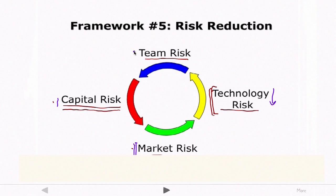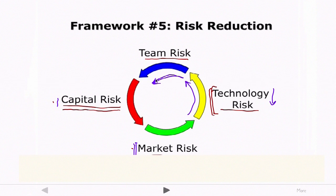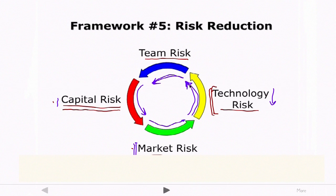You can imagine entrepreneurship as a sequential process of reducing risk, where you start with the riskiest aspect and little by little take risk out of the venture. If you recruit the initial co-founders, you've taken out some team risk. If you raise a bit of money, you've taken out some capital risk. If you sign up the first 50 customers, you've taken out some market risk. If you continue developing the technology and create a new feature customers want, you've reduced technology risk. Eventually, little by little, you de-risk the venture and create an established large organization.